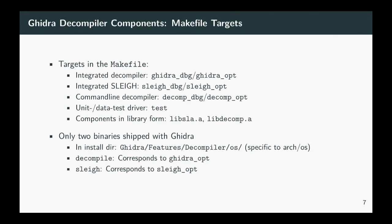Out of these targets, only two are shipped with Ghidra: one is the optimized build of the integrated decompiler, called decompile or decompile.exe inside Ghidra, and SLEIGH, which corresponds to the optimized build of SLEIGH.